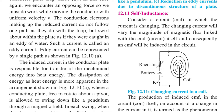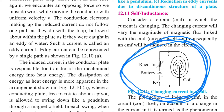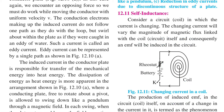Consider a circuit, also called a coil. This circuit has one battery, one rheostat, one key, and one coil attached to it. In this circuit, the current is changing — current is flowing through the coil from the battery source, and that current is changing.